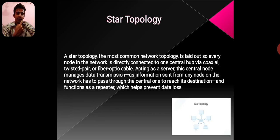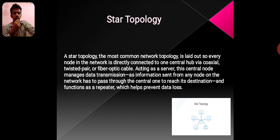Star Topology. A star topology, the most common network topology, is laid out so that every node in the network is directly connected to one central hub via a coaxial, twisted pair, or fiber optic cable. The central node acts as a server and manages data transmission. Information sent from any node on the network has to pass through the central node to reach its destination, and it functions as a repeater which helps prevent data loss.